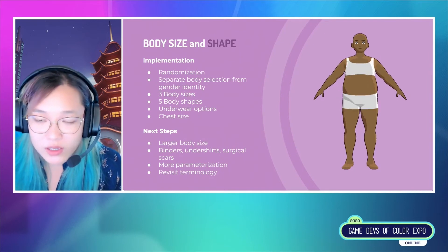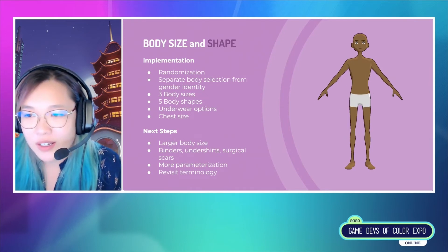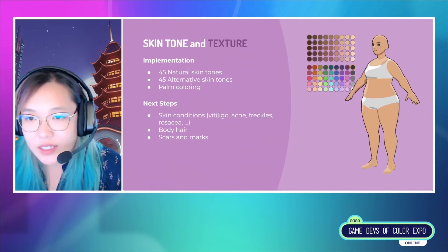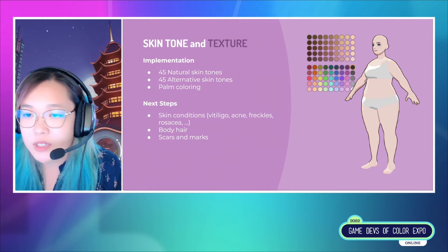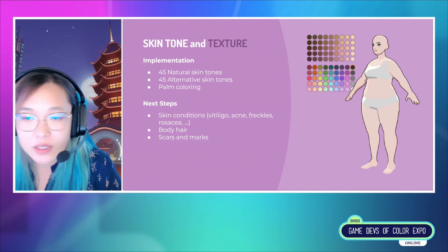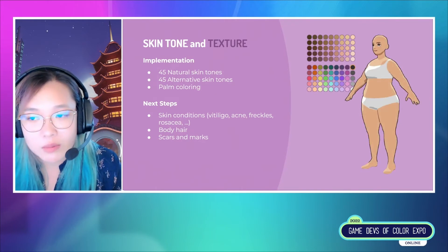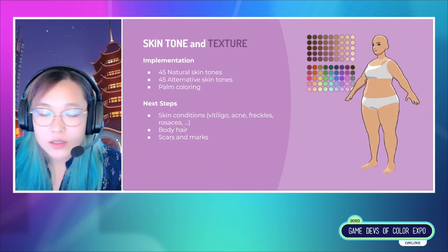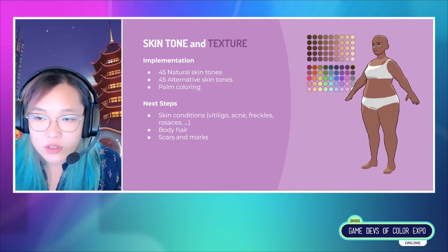I also want to revisit the terminology for body size, because although small, medium, and large turned out to be the most acceptable classification I could come up with, I do think it needs revisiting. For skin tone, I relied heavily on the Fenty makeup process of selecting a foundation combined with some ideas from 2D art tutorials. The 45 natural skin tones range from deep to medium to light, and then another range from cool to neutral to warm. I also show palm coloring because a lot of games that include darker skin tones fail to change the palm color. There's also an alternative skin palette to show that fantasy skin tones don't have to be limited to pastels — it's important to include dark skin tones in fantasy palettes as well. Next steps would be to add skin textures for conditions like vitiligo, acne, freckles, and rosacea, and also to show body hair and markings.